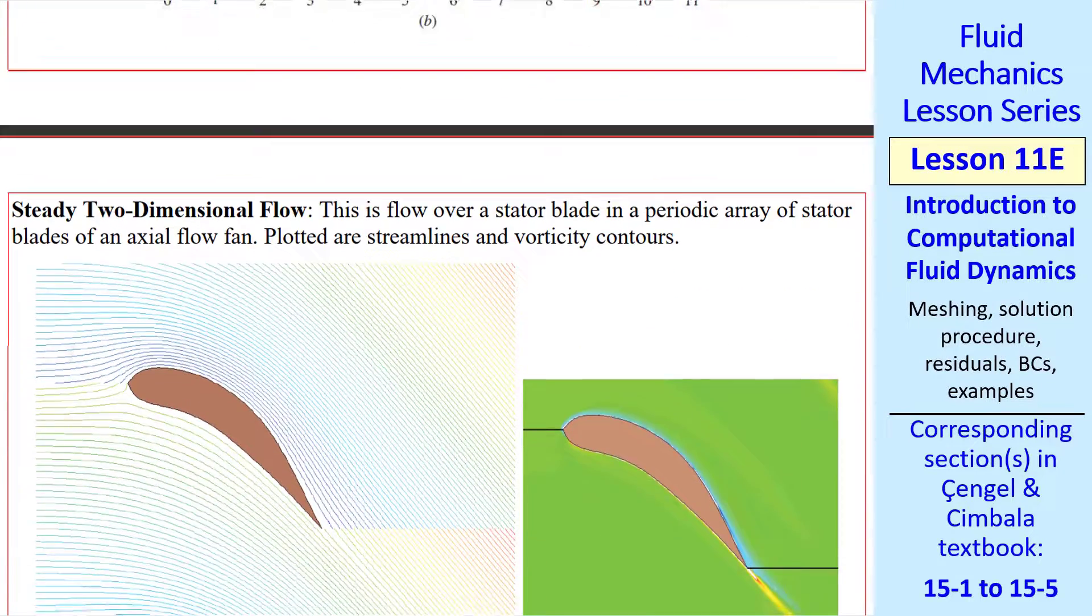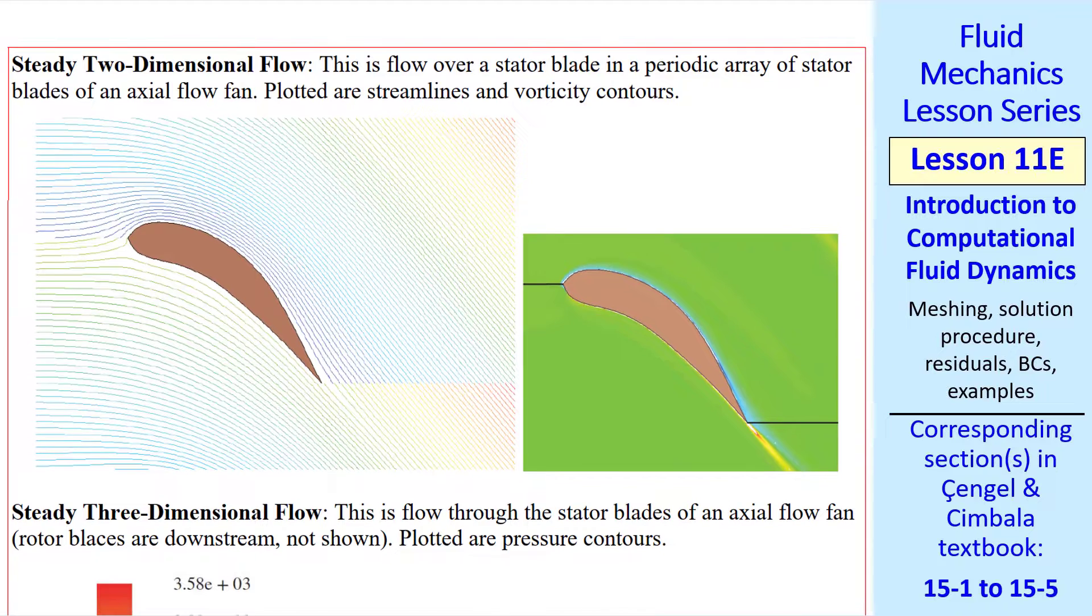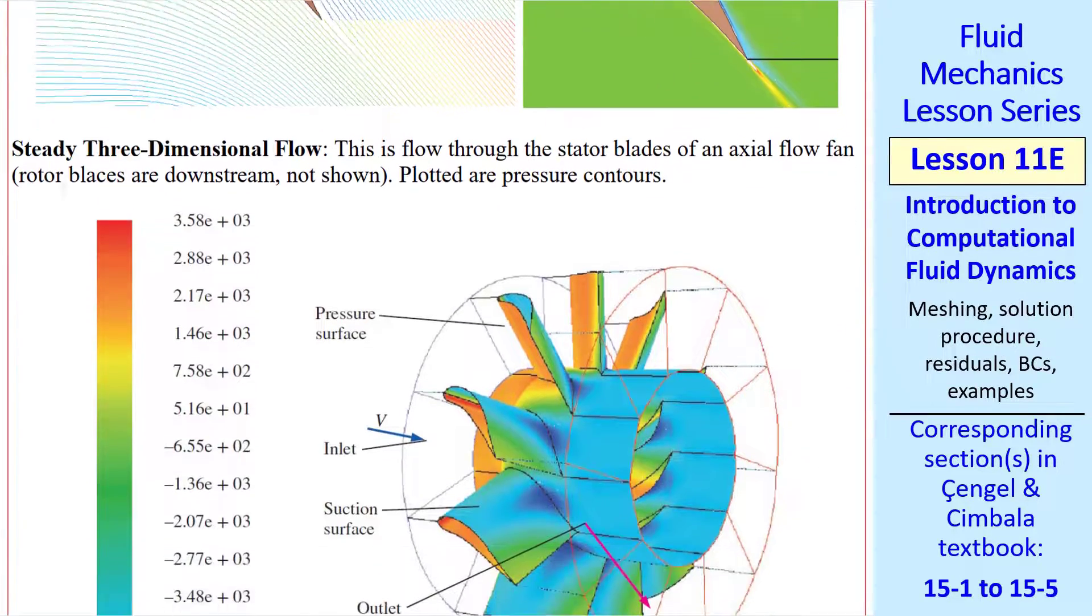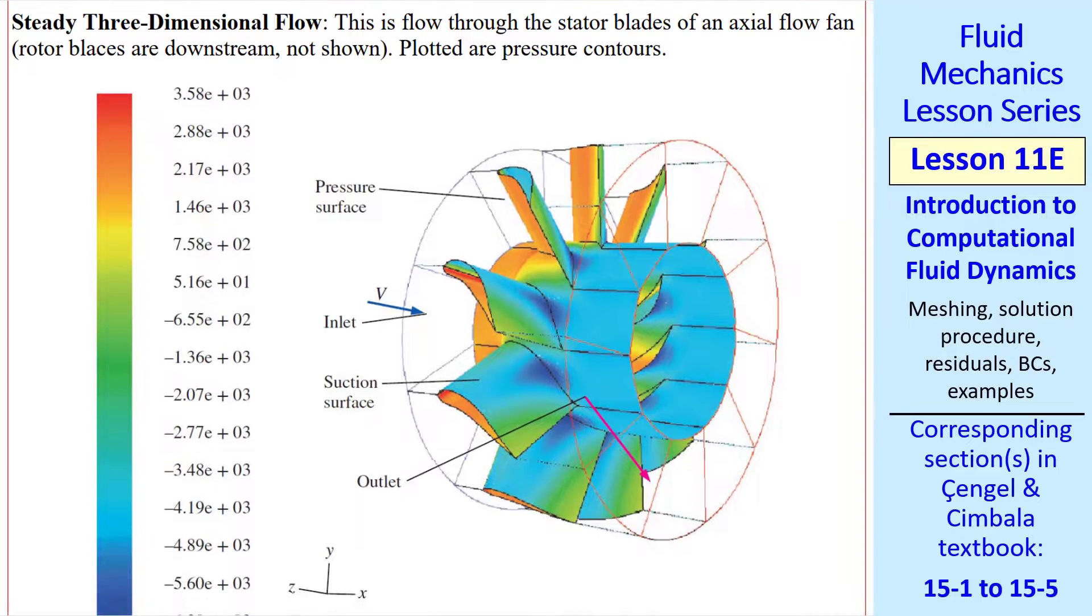As another example, let's look at steady two-dimensional flow over a stator blade in a periodic array representing an axial flow fan. Here we plot streamlines. Here we plot vorticity contours. Later on when we talk about boundary layers, we'll learn that vorticity is non-zero within a boundary layer and within a wake. Outside the boundary layer, this green area shows that the vorticity is nearly zero.